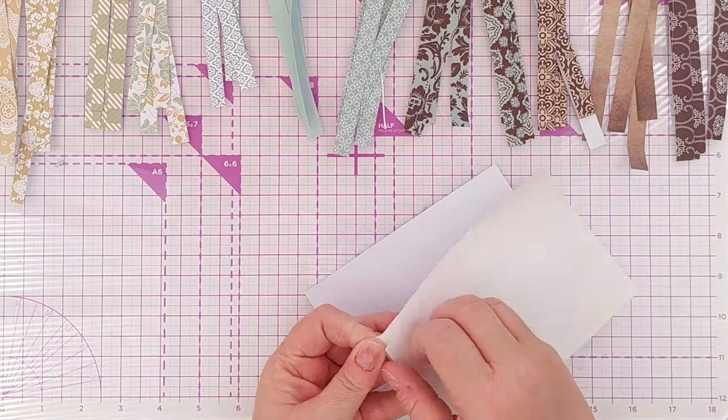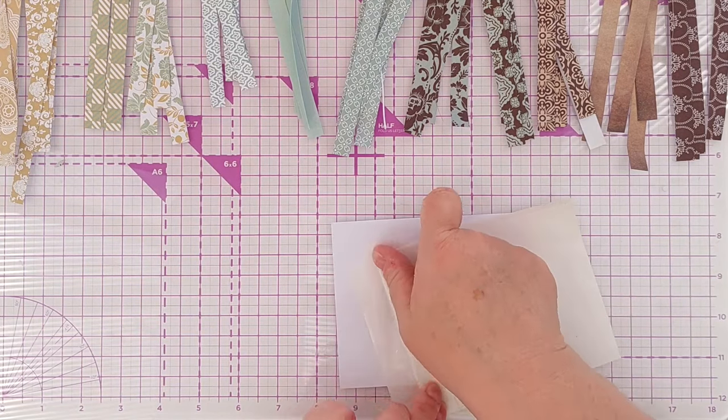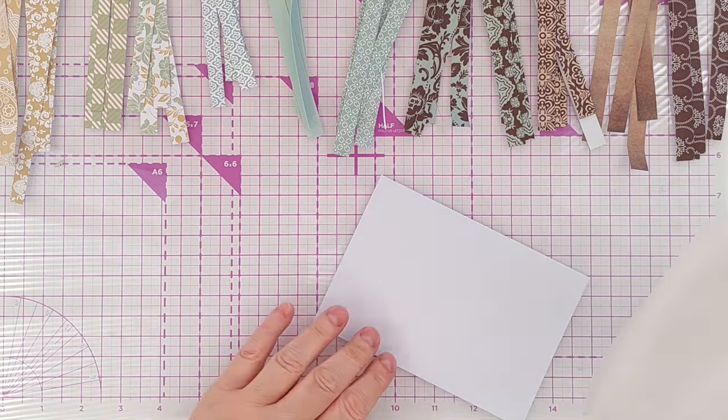Next I took a 4x6 inch piece of smooth white cardstock and added a sheet of double-sided adhesive to it.